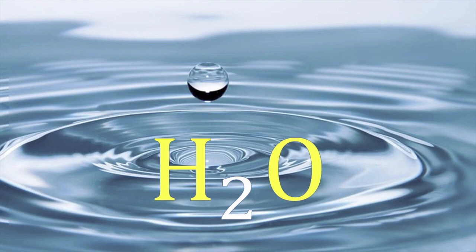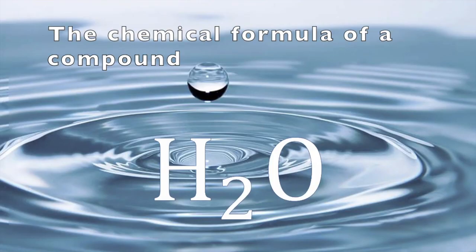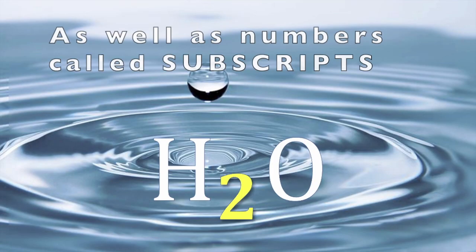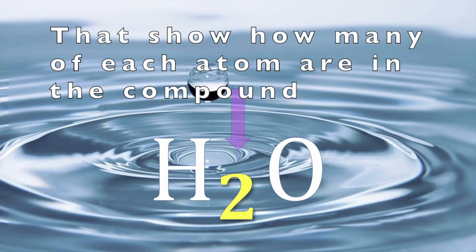H2O is an example of a chemical formula, and every single compound can be represented with one. The chemical formula of a compound includes the symbols for the chemical elements that make up the compound, as well as numbers called subscripts that show how many of each atom are in the compound.